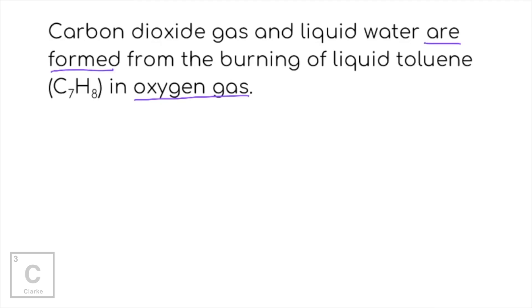Carbon dioxide gas and liquid water are formed. That means carbon dioxide gas and liquid water. Those were products. They're formed from the burning of liquid toluene and oxygen gas. So let's start writing that. Toluene and oxygen gas are going to be our reactants. So we're going to have C7H8 because most of us don't know the formula for toluene. Oxygen gas. You've got to put O2 because we have to know oxygen diatomic. There's no clue. No clue.